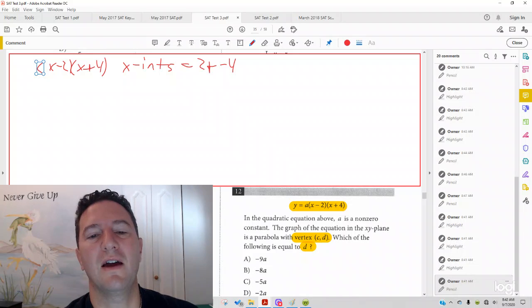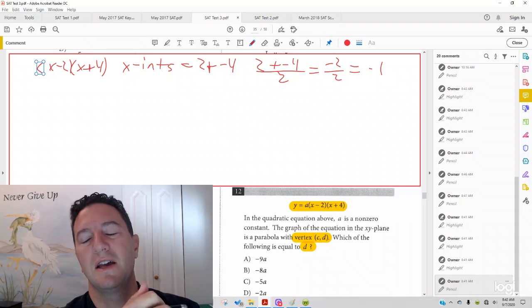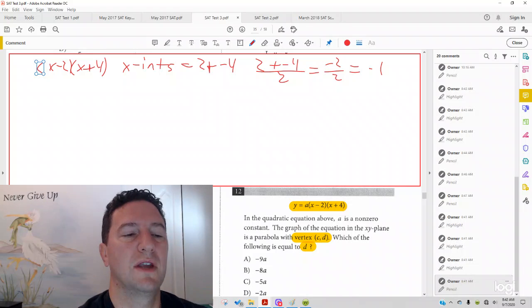And if it's exactly between, what do you do? You literally take the average. So if we do 2 plus negative 4 over 2, and divide by how many, you get negative 2 over 2, you get negative 1. Negative 1 is the axis of symmetry, otherwise known as the vertex.